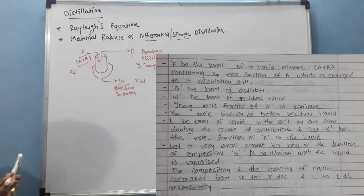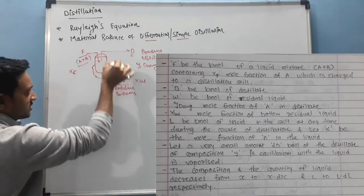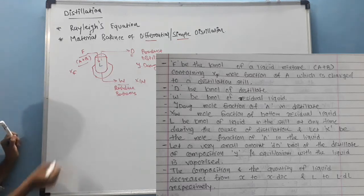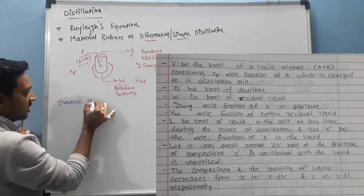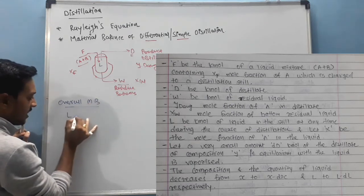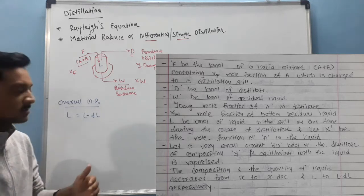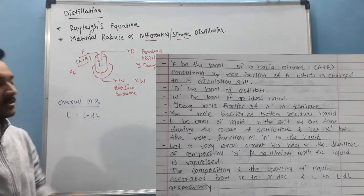We are directly going to discuss material balance. If feed is introduced into the jacketed kettle or still, it is known as L. So initial overall material balance, L is equal to the limit of L to DL. That means every liquid is going to be vaporized.